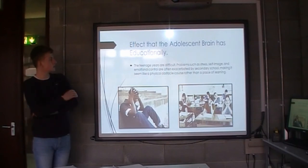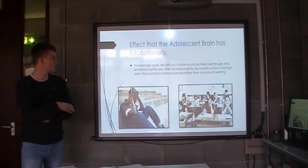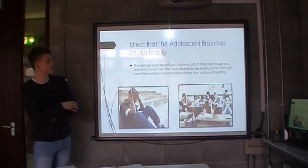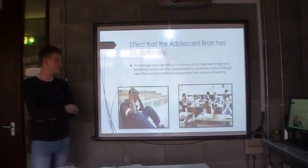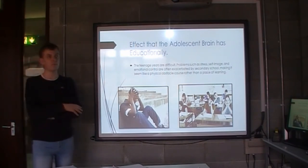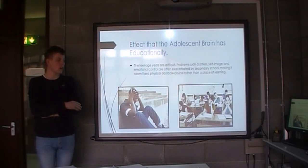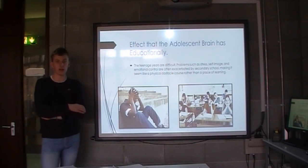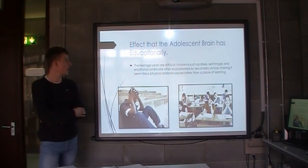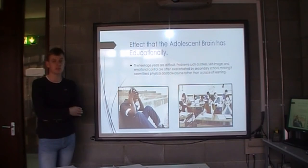In terms of the adolescent brain educationally, the teenage years are difficult. Problems such as stress, self-image and emotional control are often exacerbated by secondary school, making it seem like a physical obstacle course rather than a place of learning. Many teenagers don't like going to school because the adolescent brain is still not ready to be learning and processing many things. That's why many teenagers just don't seem to like school, and that's how the adolescent brain takes an effect on people educationally and socially.